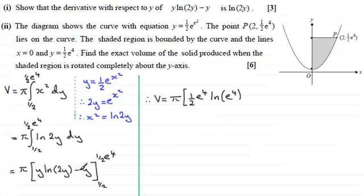And then we've got minus y. So that's minus a half e to the power 4. And from this we now subtract what we get when we substitute y is a half in here. So we've got a half. Okay let's put this in brackets. A half multiplied by the natural log of 2 times a half which is going to be the natural log of 1. And then we've got minus y minus a half then.